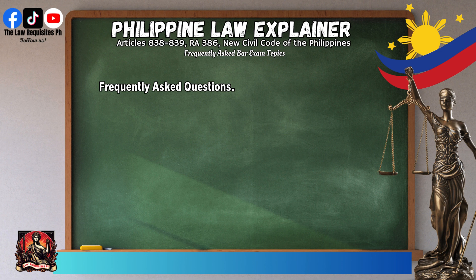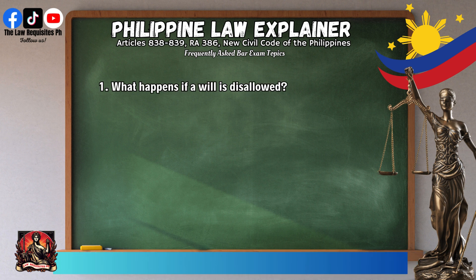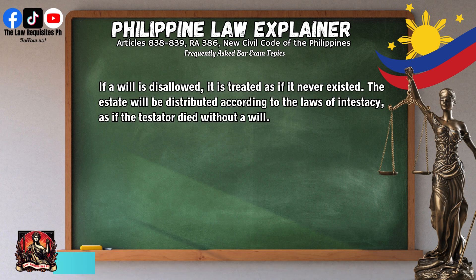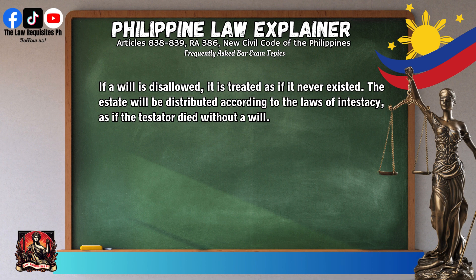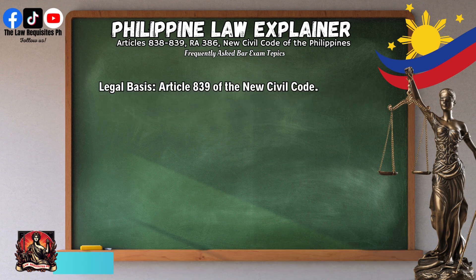Frequently Asked Questions. Question 1: What happens if a will is disallowed? If a will is disallowed, it is treated as if it never existed. The estate will be distributed according to the laws of intestacy, as if the testator died without a will. Legal basis: Article 839 of the New Civil Code.